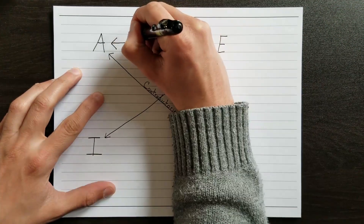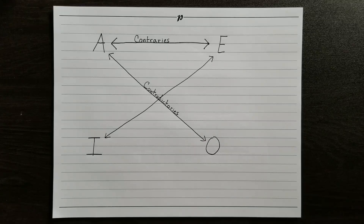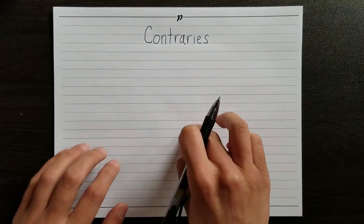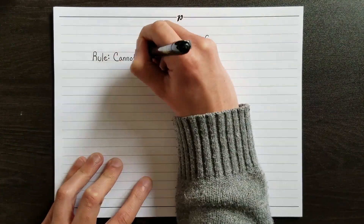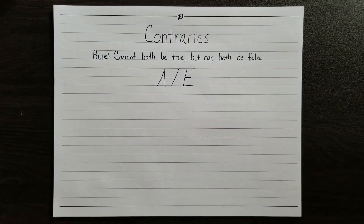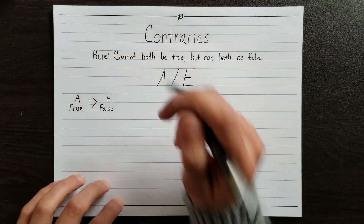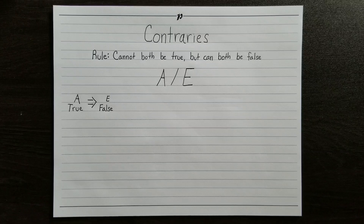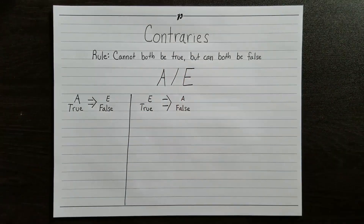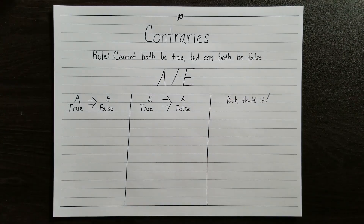The next relation we'll look at holds between A-type and E-type statements: A-type and E-type statements are contraries. Contrary statements cannot both be true, but they can both be false. This means that if the A-type is true, then we know that the E-type must be false, since only one of them can be true at a time. If the E-type is true instead, then the A-type must be false. But that's all we can know. If the only thing we know is that the E-type is false, then we don't know anything about the A-type — it could go either way.